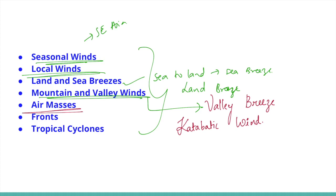Air masses: when air remains over a homogeneous area for a sufficiently long time, it acquires the characteristics of that area. The homogeneous region can be a vast ocean surface or vast plains. Air with distinctive characteristics in terms of temperature and humidity is called an air mass.